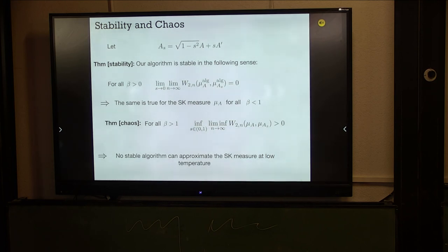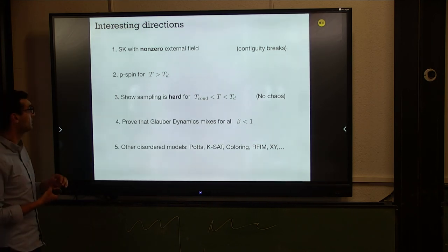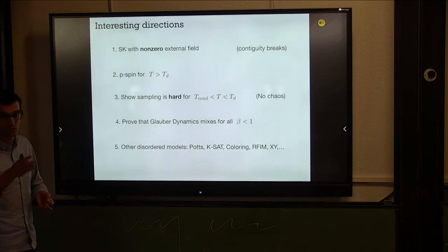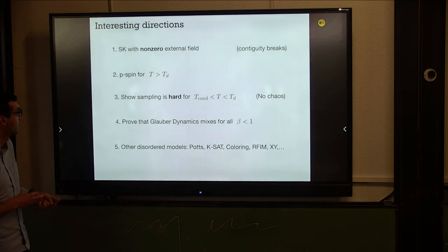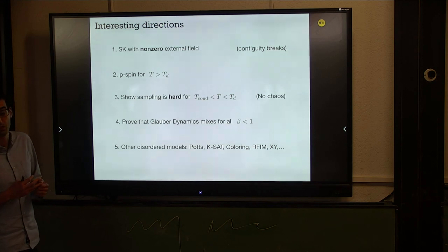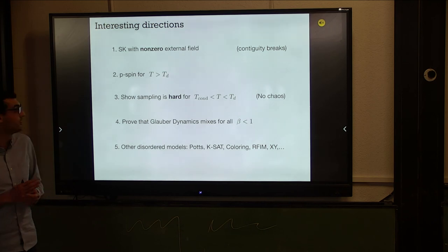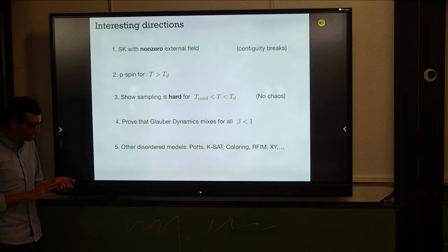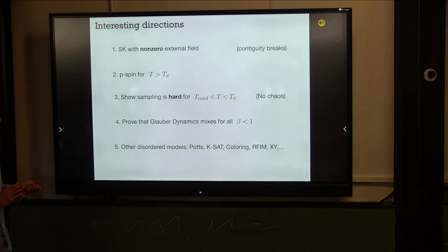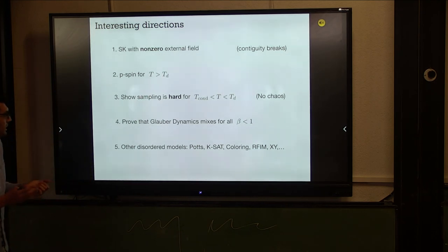Let me discuss interesting open directions. I showed an algorithm that samples from the SK measure without external field. If you give me an arbitrary external field from the beginning, the algorithm should still work, but the proof breaks badly because contiguity breaks and I can't introduce a planted model. Second, can you generalize to p-spins? This is easy at high enough temperature, and one would like to push this up to the dynamical transition.